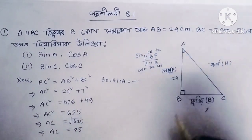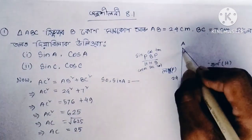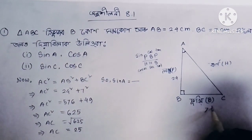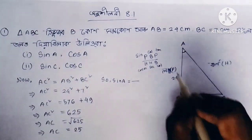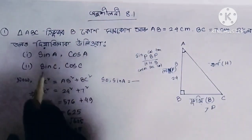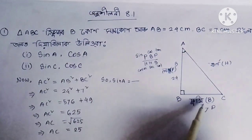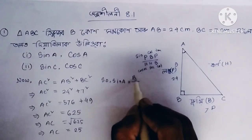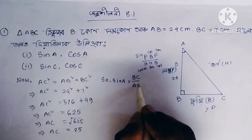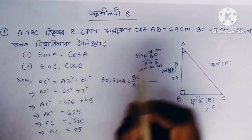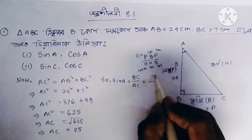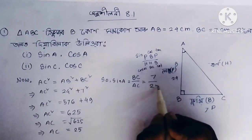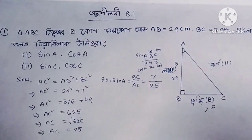So if we take sin E, then the perpendicular P is BC and the hypotenuse H is HC. Sin E equals P by H, which is BC by HC. BC equals 7, HC equals 25. Therefore sin E equals 7 by 25.